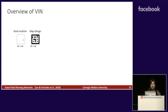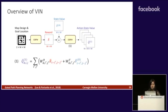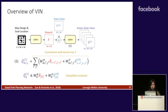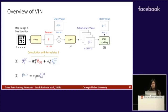A quick overview of VIN: the input is the goal location and the map design, which are both binary matrices stacked as different channels. The input is passed through a convolutional layer to estimate a reward matrix. This reward is stacked with an initial state value matrix and passed through another convolutional layer to produce estimates of the action state value. The summation denotes a convolution with kernel size 3 and W are the convolutional weights. Finally, the Q values are passed through a max pooling layer over the feature channels to estimate the state value matrix V.